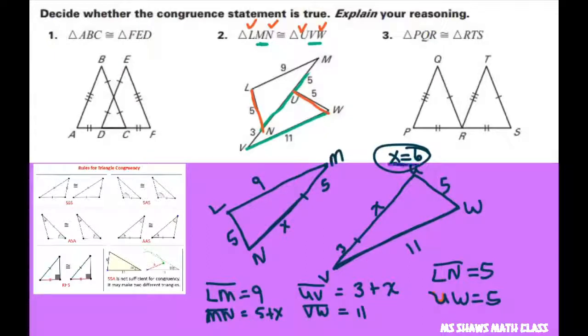Because if X is 6, then these would also be congruent. So this is a yes by the side-side-side. So if this is 6, we're good. All right. So number 3.